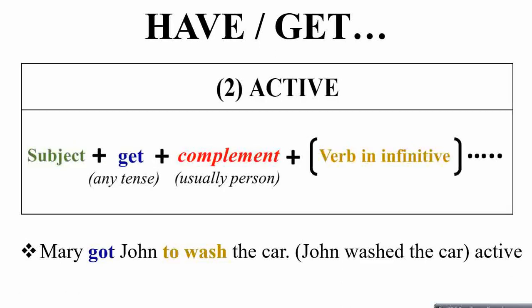Second, if you use 'get' with an active clause, the sentence structure is: subject + get (in any tense) + complement (usually a person) + verb in the infinitive form. With 'have' there was a simple verb form, but with 'get' as a causative verb you use the infinitive. For example: 'Mary got John to wash the car.'